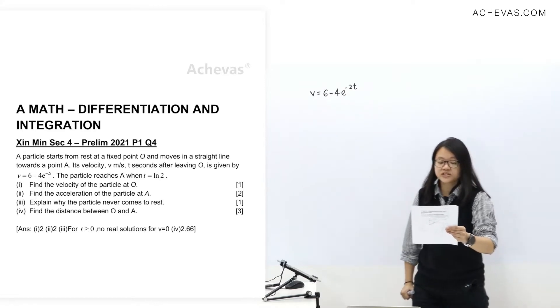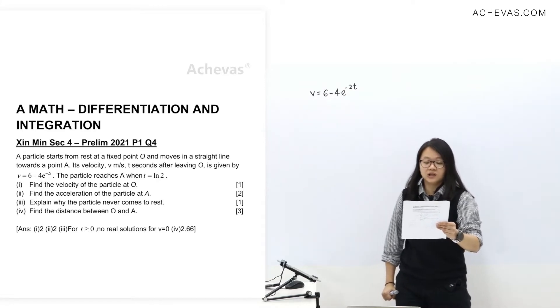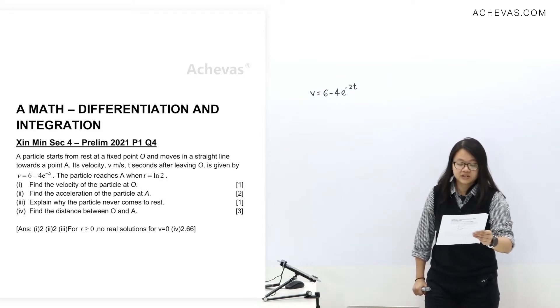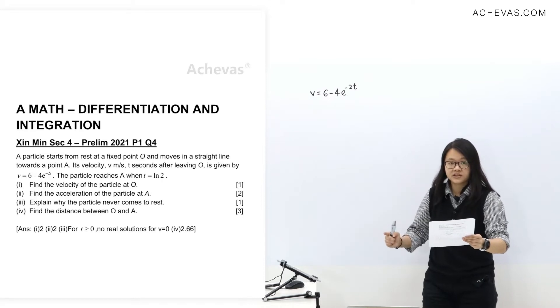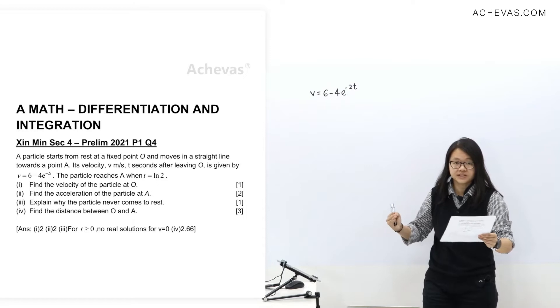The particle reaches A when T equals ln 2. Part 1, find the velocity of the particle at O. At O meaning it just started moving, right? So T equals 0.